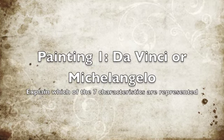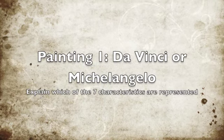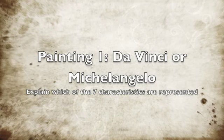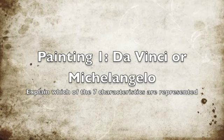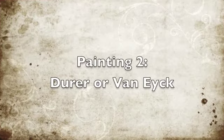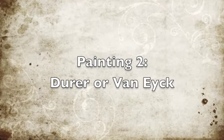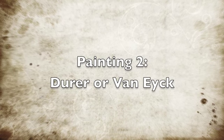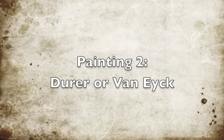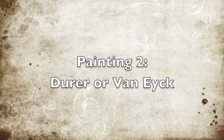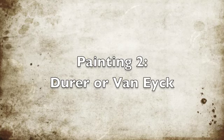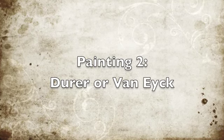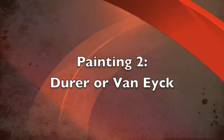After you watch the video, identify which of the seven characteristics you learned about are represented in that painting. The other painting you want to look up is going to be a Northern Renaissance artist, either Albrecht Dürer or Jan van Eyck. You'll find plenty of paintings on each — just pick two and explain the characteristics. We're going to learn about those characteristics right now.